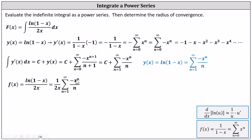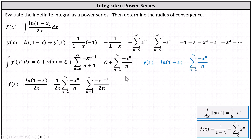Notice x to the power of n divided by x to the first equals x to the power of n minus 1, and the denominator becomes 2 times n, which equals 2n. Finally, we have the power series for the integrand function, and we can determine the indefinite integral as a power series.